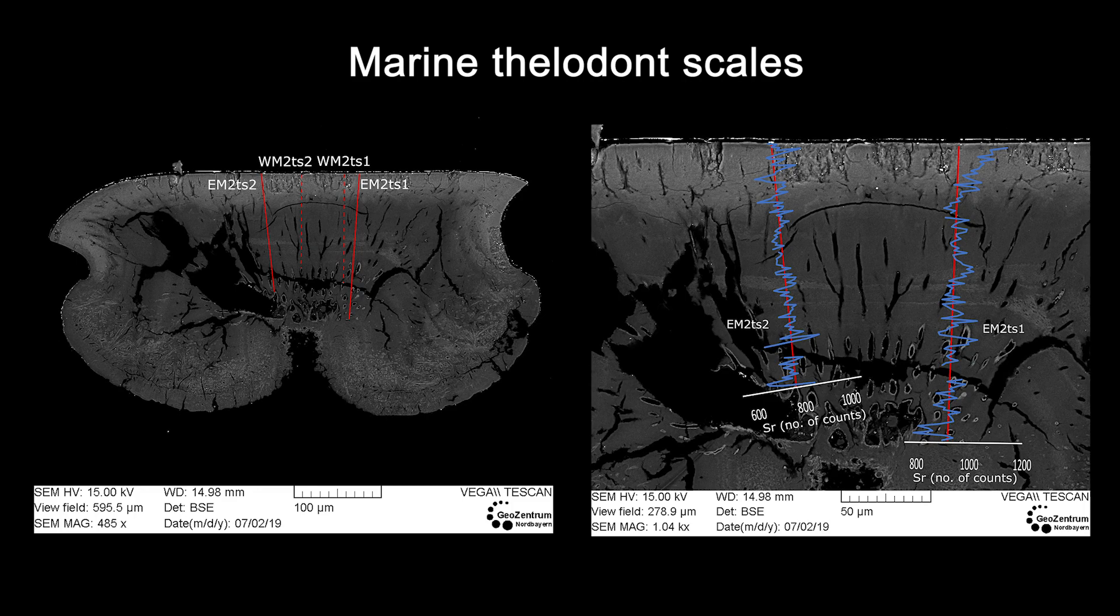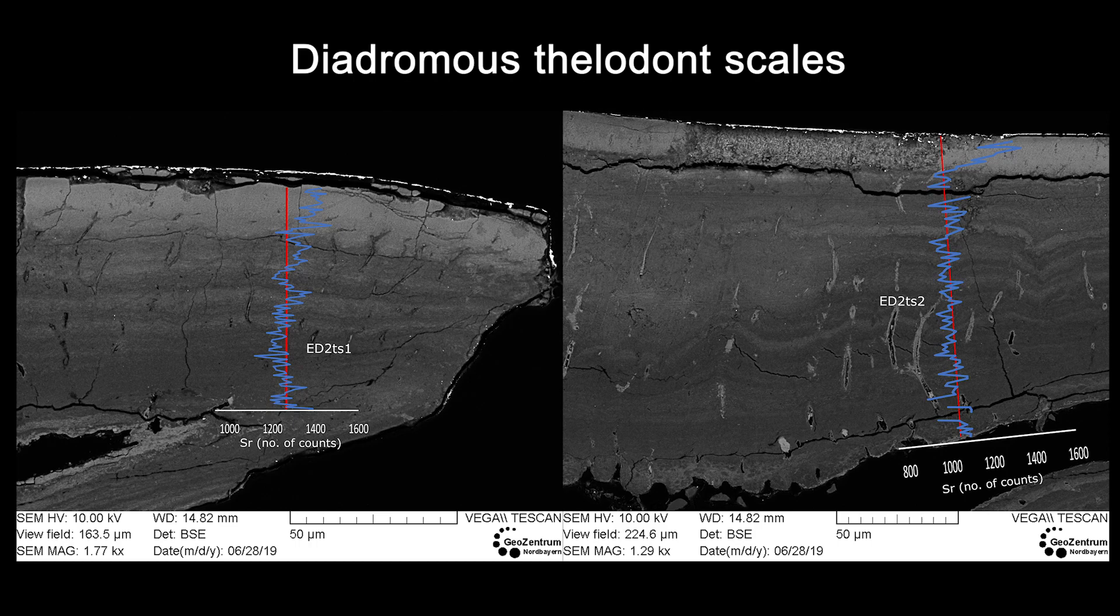I measured several EDX line transects perpendicularly to the visible growth layers in my marine as well as in my potential diadromous samples. The following graphs show the distribution of strontium in number of counts across the different life stages of the thelodonts. In general, all obtained strontium patterns look quite constant.